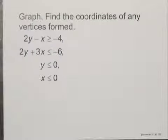Graph and find the coordinates of any vertices formed. We have a system of four inequalities: 2Y minus X is greater than or equal to negative 4, 2Y plus 3X is less than or equal to negative 6, Y is less than or equal to 0, and X is less than or equal to 0.